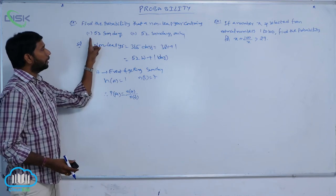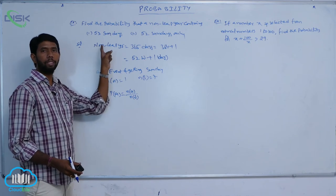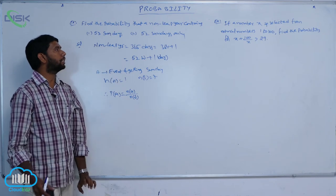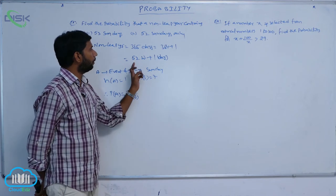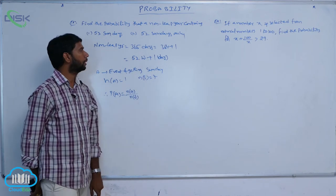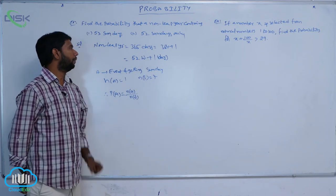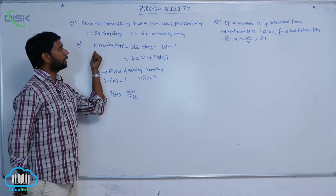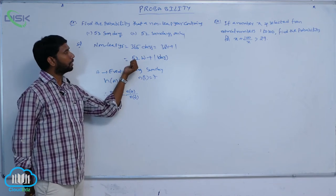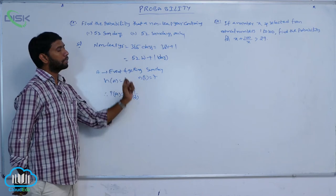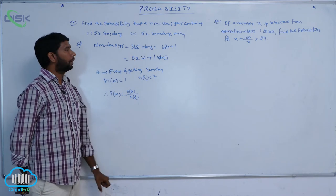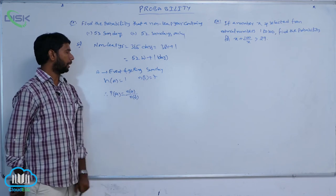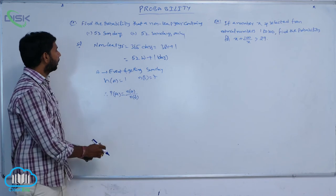For a non-leap year, 365 days can be written as 52 weeks plus 1 day. The required event is 53 Sundays. Already 52 Sundays are accounted for, so the remaining 1 day must be a Sunday, giving probability 1/7.